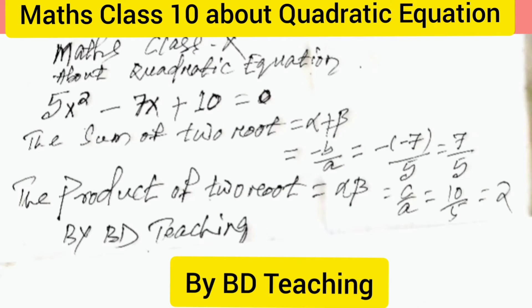Welcome to all of you from BD Teaching channel. Today we will discuss mathematics for Class 10 students about quadratic equations. If 5x² - 7x + 10 = 0, then the sum of two roots equals